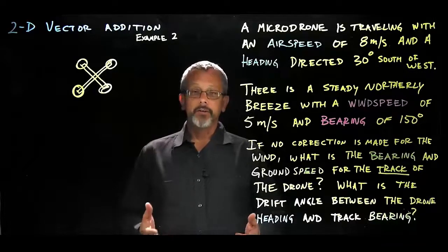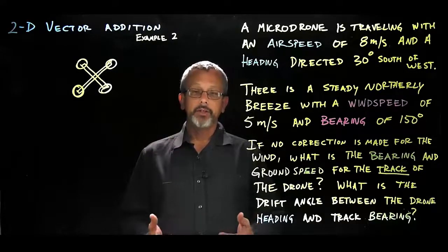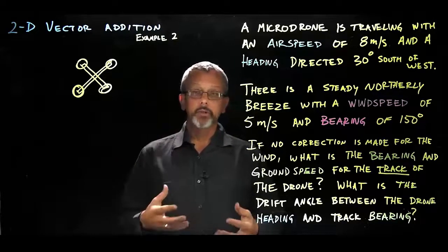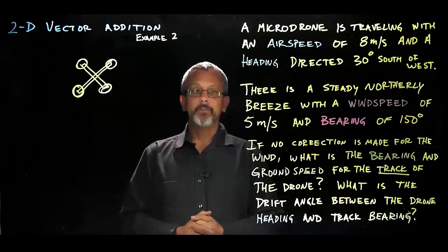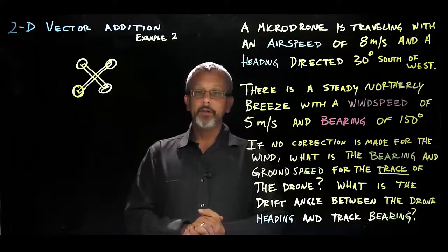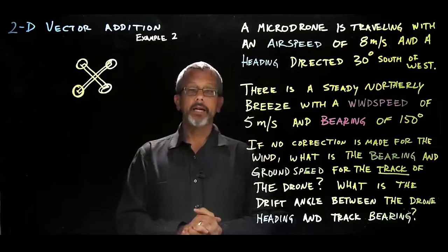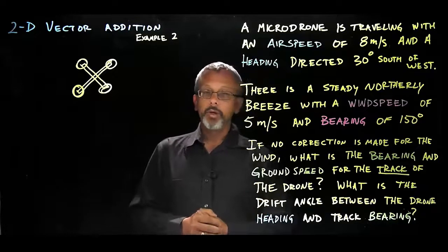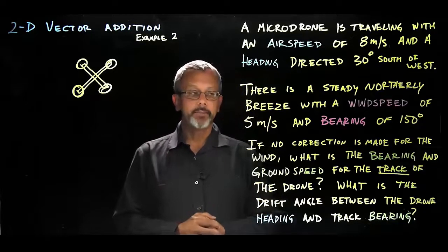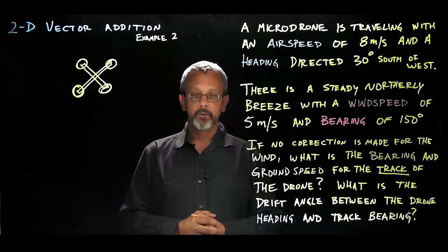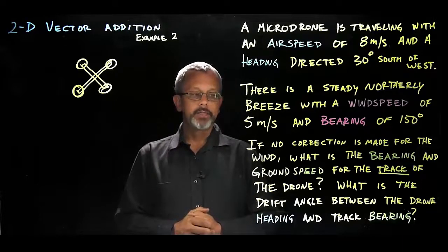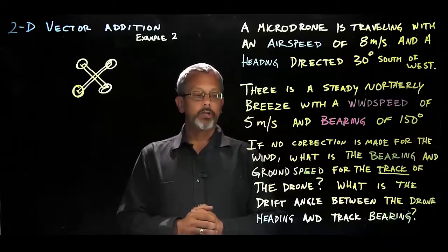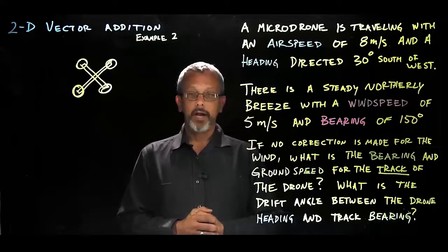Let's consider another example of vector addition in two dimensions applied to aerospace. In this problem we have a micro drone traveling with an airspeed of 8 meters per second and a heading directed 30 degrees south of west. There is a steady northerly breeze with a wind speed of 5 meters per second and a bearing of 150 degrees. If no correction is made for the wind, what is the bearing and ground speed for the track of the drone, and what is the drift angle between the drone heading and the track bearing?